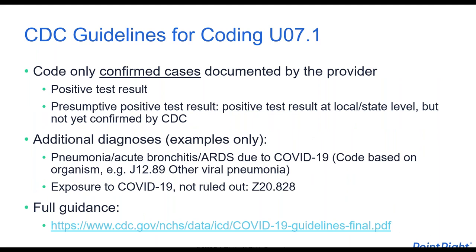Now the CDC guidelines for coding U07.1 are very specific. The CDC released a guideline specifically for this new code — the URL to download it is in your handout. In order to assign this ICD-10 code, it captures only confirmed cases that have been documented. To code any diagnosis, you need a documented diagnosis written by a practitioner — a physician, nurse practitioner, physician's assistant, or clinical nurse specialist depending on your state. A confirmed case means a positive test result from the lab.